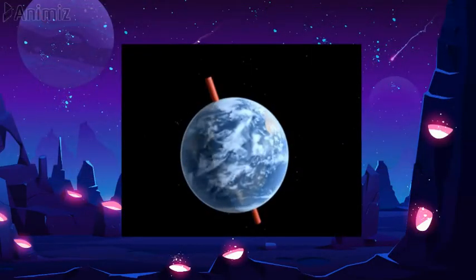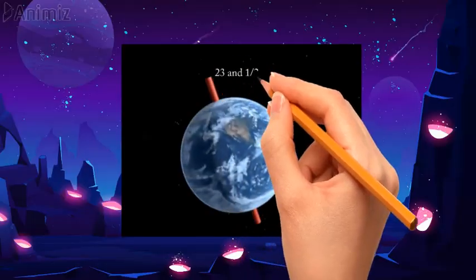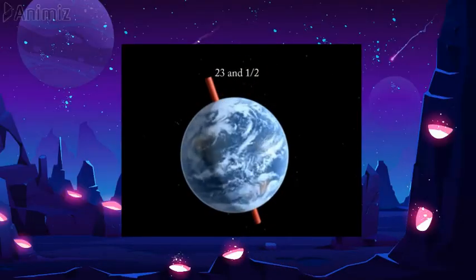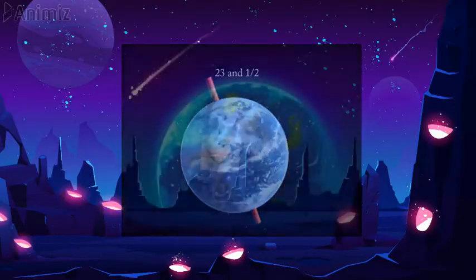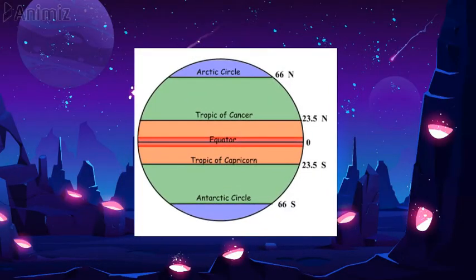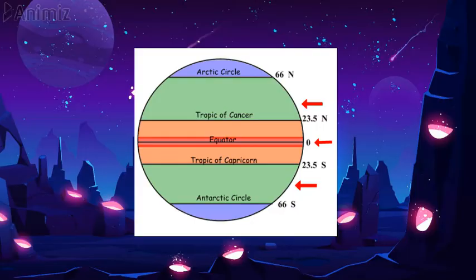The earth is tilted at an angle of 23 and a half degrees from its axis. Then we have to know about the important latitudes of the earth, which are: the equator at zero degrees, the Tropic of Cancer at 23 and a half degrees north, and the Tropic of Capricorn at 23 and a half degrees south.